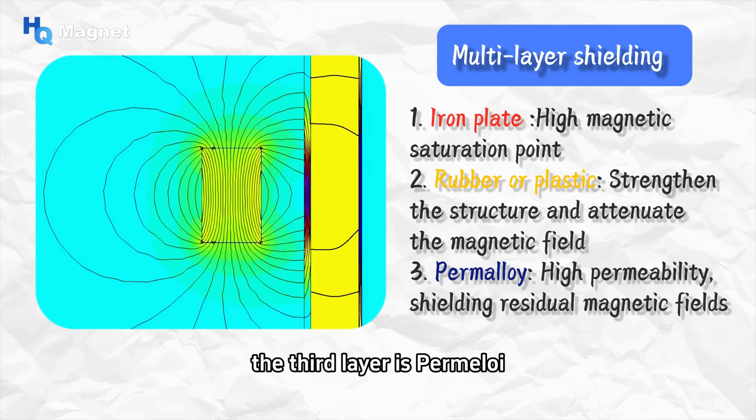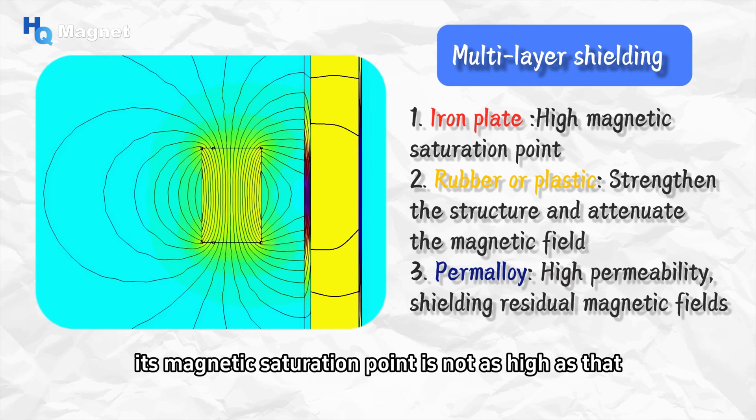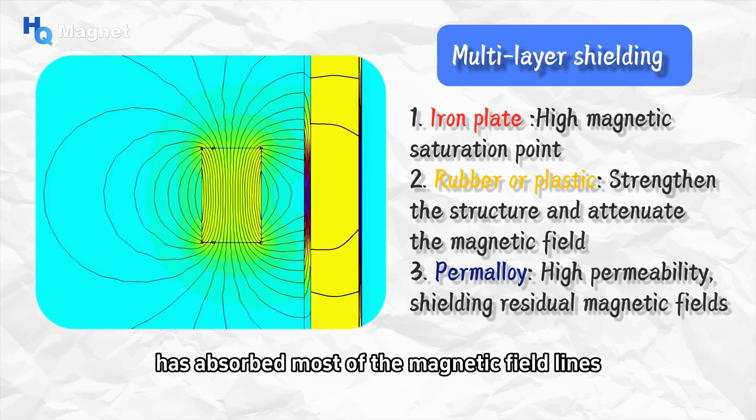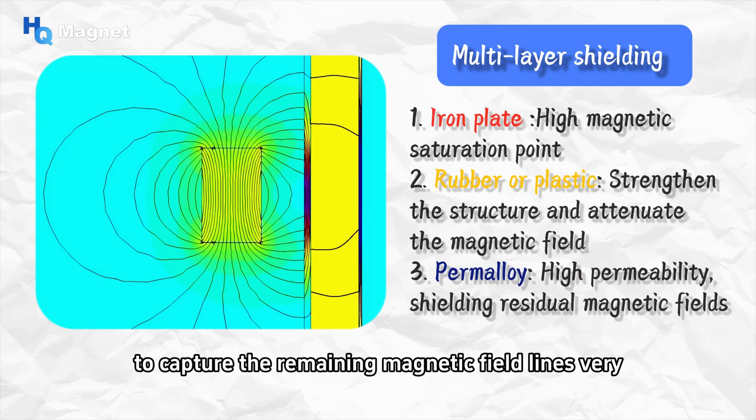The third layer is permalloy. Although its magnetic saturation point is not as high as that of the iron plate, given that the soft iron plate in the previous layer has absorbed most of the magnetic field lines, the ultra-high magnetic permeability of permalloy allows it to capture the remaining magnetic field lines very effectively to ensure the complete shielding of the magnetic field.